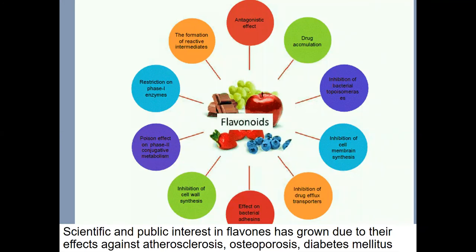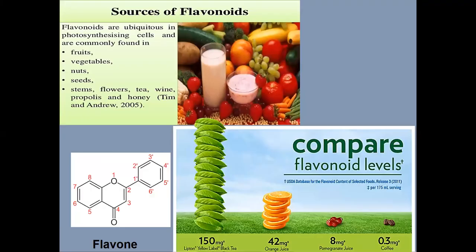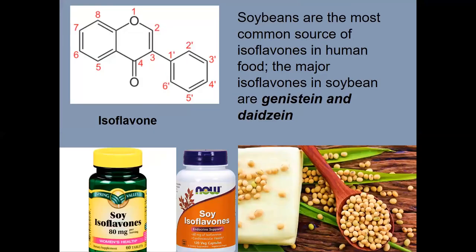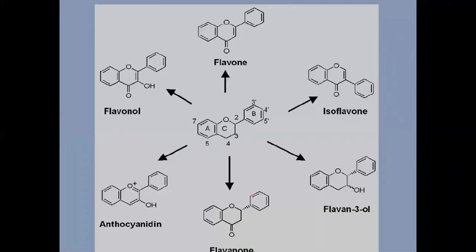Flavonoids exhibit biological activity against atherosclerosis, osteoporosis, and certain cancers. Sources of flavonoids are fruits, vegetables, nuts, flowers, tea, wine, and others. You can see the chemical formula of flavan. Isoflavonoids are found in black tea, orange juice, pomegranate juice, and coffee. Soybeans are the most common source of isoflavones in human food. You can see chemical formulas of different flavonoids.